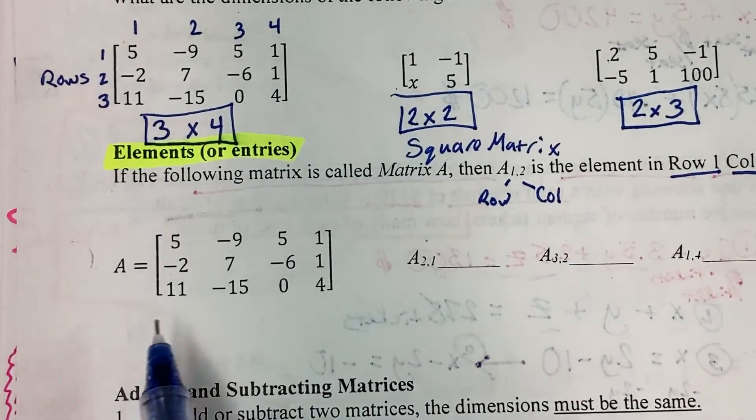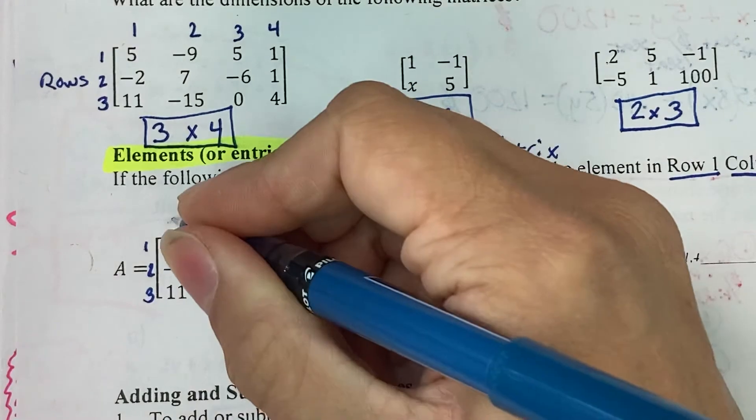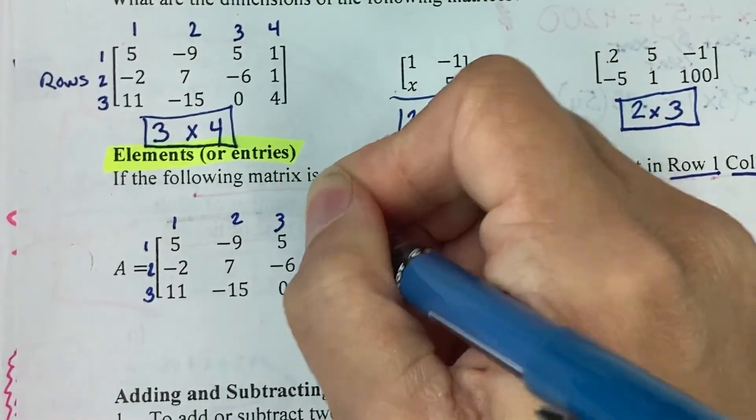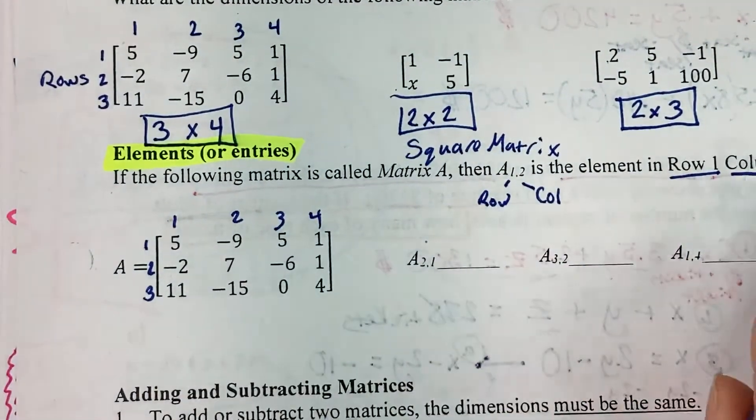So row 1, column 2, that would be negative 9.